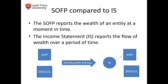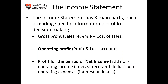A statement of financial position represents the wealth of our business at a specific moment in time — at a given date. But the income statement represents the flow of wealth over a period of time.